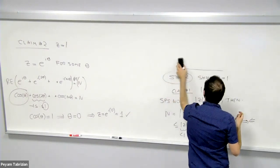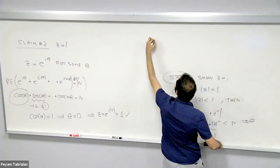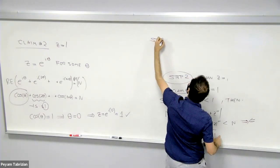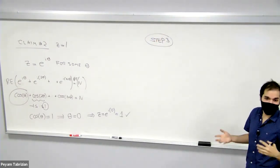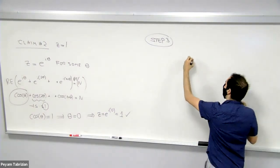So we've shown that z = 1. But then that's a contradiction. But now, how can we conclude? Well, remember, we assumed f(z) = 0.